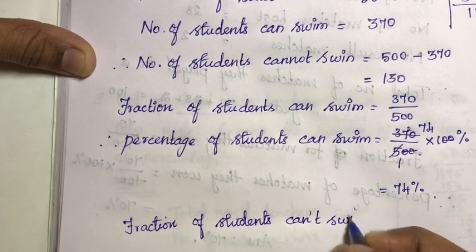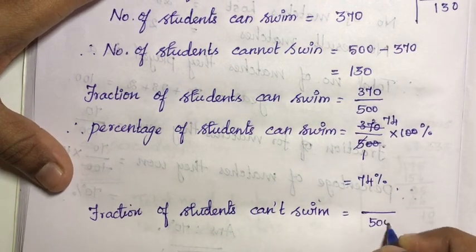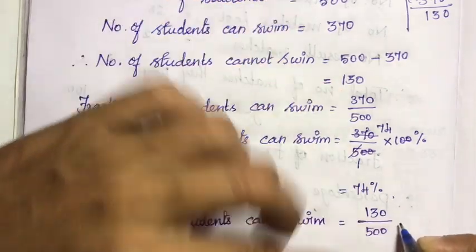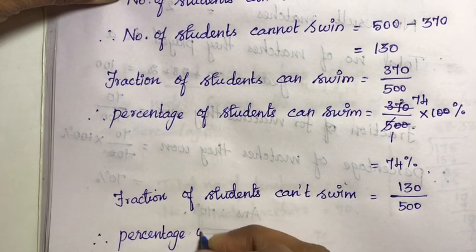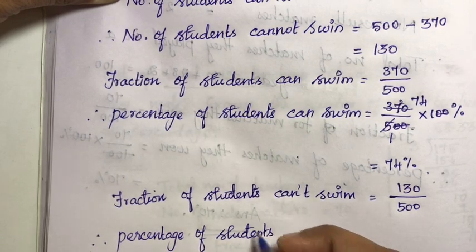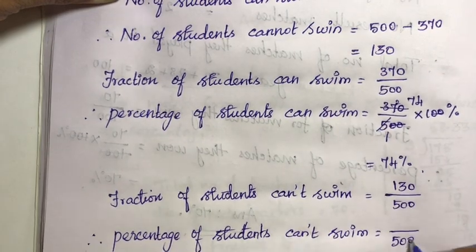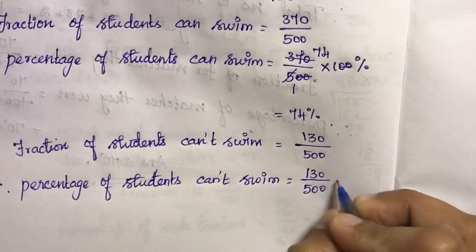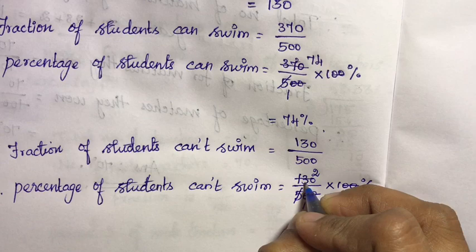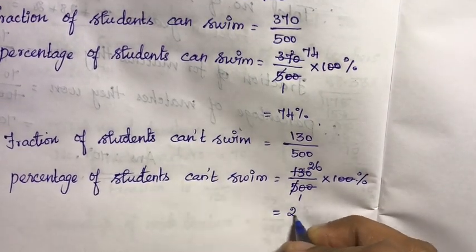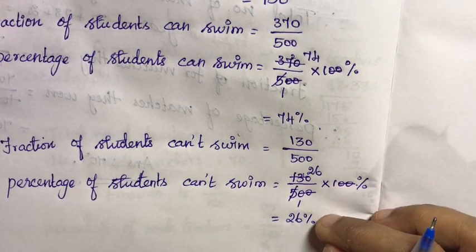Next, fraction of students who cannot swim. Out of 500 students, 130 cannot swim. Therefore, percentage of students who can't swim is equal to 130/500 multiplied by 100. Cancel zeros: 1 five is 5, 2 fives are 10 remainder 3, then 30 — 6 fives are 30. That is 26 percentage. So 74 percentage can swim and 26 percentage cannot swim.